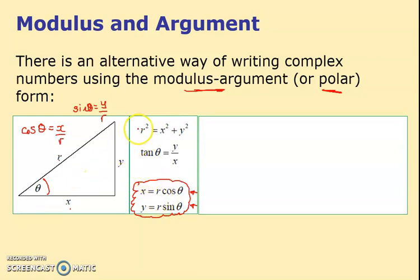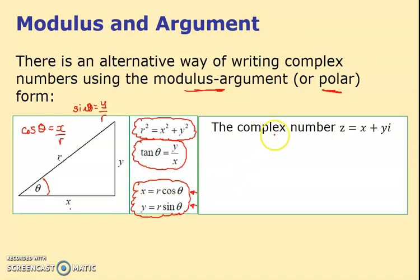If I rearrange that equation, I get x = r cos θ. Likewise, I could do the same with sin θ. Sin θ would be the opposite over the hypotenuse, y over r, and if I rearrange that I get this equation. These are very useful equations, so write them down.